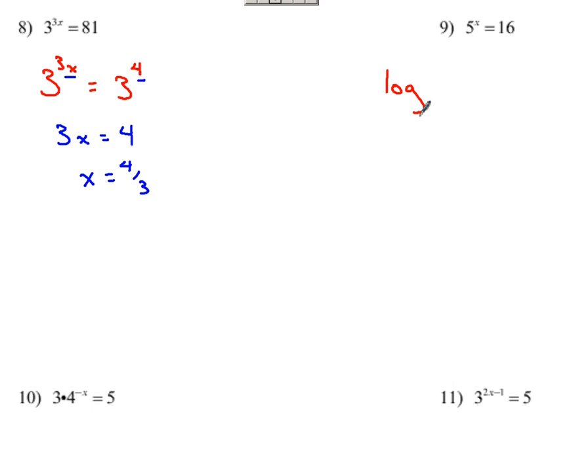If I take a logarithm of base 10, apply it to the left-hand side, it'd be log of 5 to the x equals, have to apply the same logarithm with the same base to the right side, the log of 16. By doing that, and now using the properties that I know, I can take this x and I can bring it down to the front.